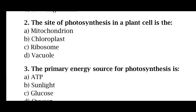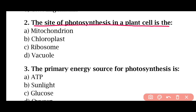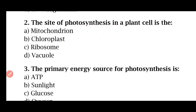Question 2: The site of photosynthesis in a plant cell is — mitochondrion, chloroplast, ribosome, or vacuole. The correct answer is option B. Photosynthesis occurs in the chloroplast.